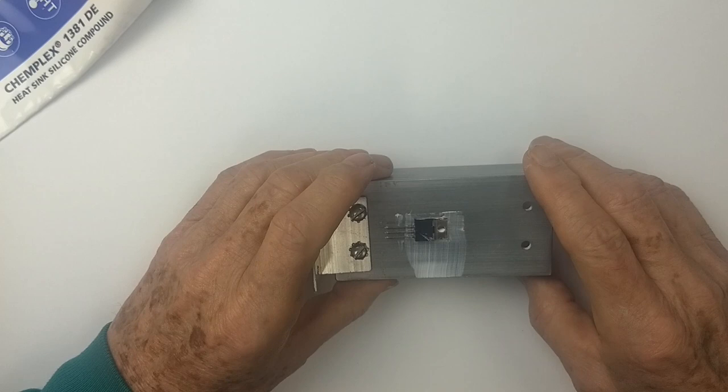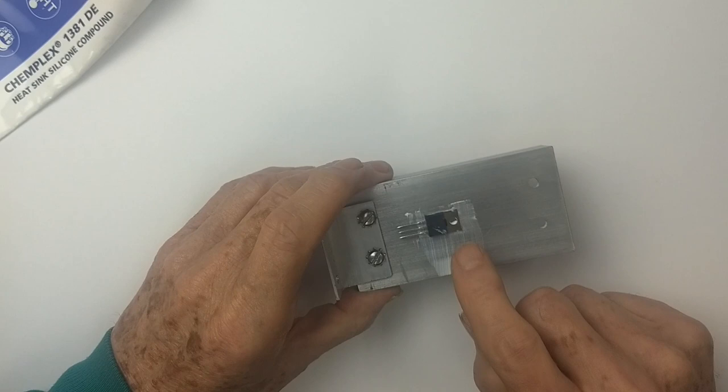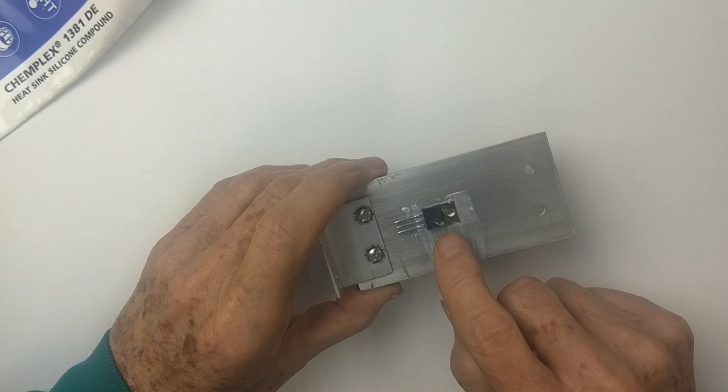The hole is just not quite big enough in those for a number 6 screw. So the next thing we're going to do is mount this, and we're going to put a thermocouple between the head of the screw and the transistor, so that we can monitor the case temperature.